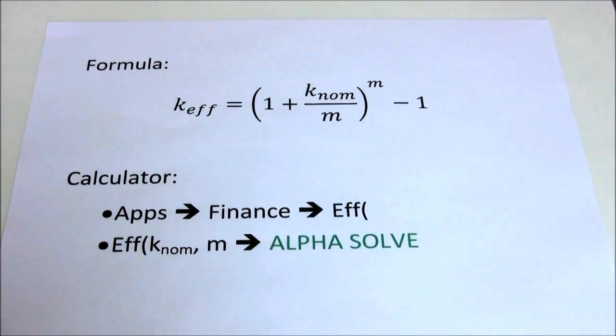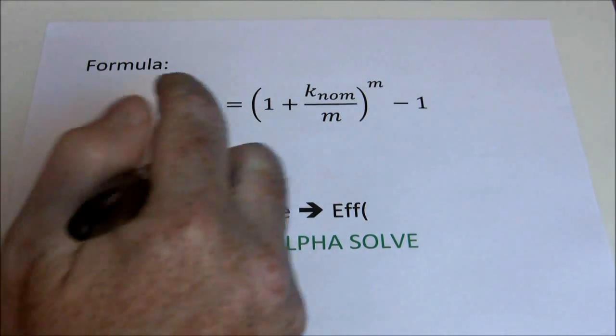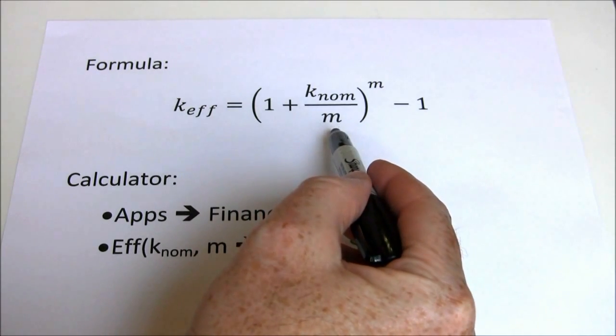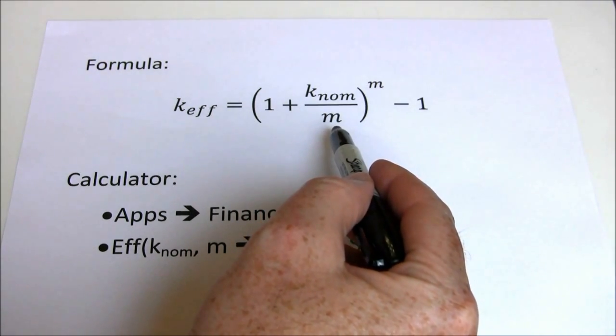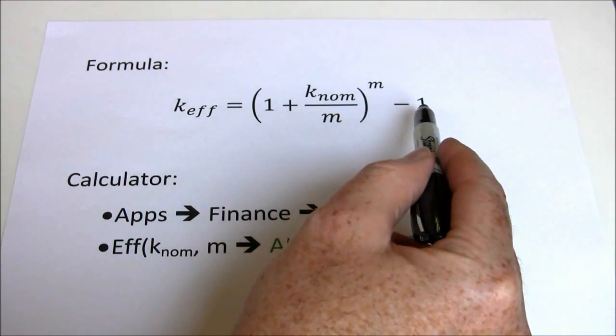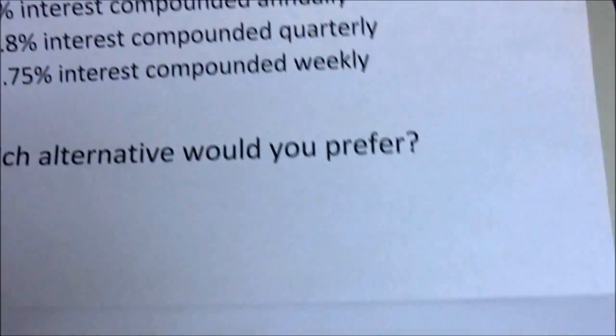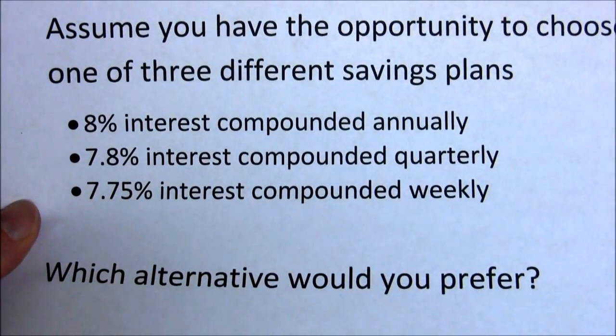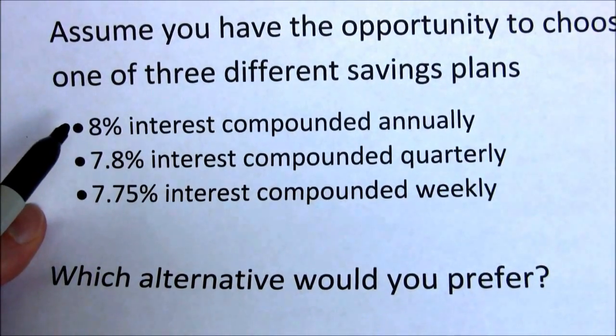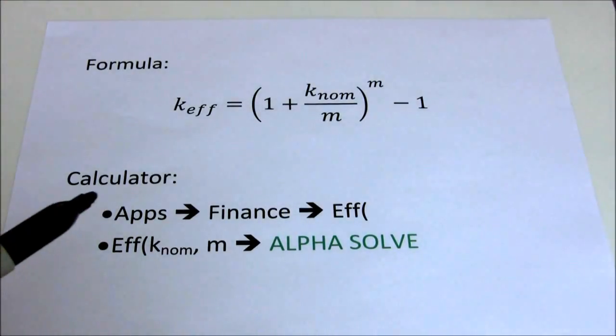In our formula the effective rate is 1 plus the nominal rate divided by m, where m is the number of compounding periods per year, raised to the m minus 1. The idea of effective annual rates is to convert everything to their annual equivalent. Here 8% interest compounded annually is already an annual equivalent. We don't have to do anything to it.